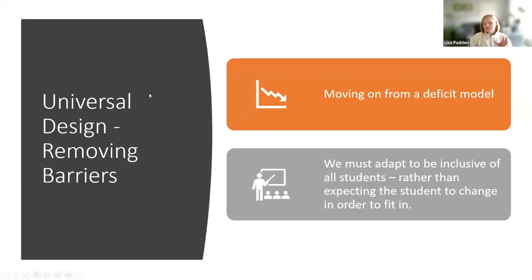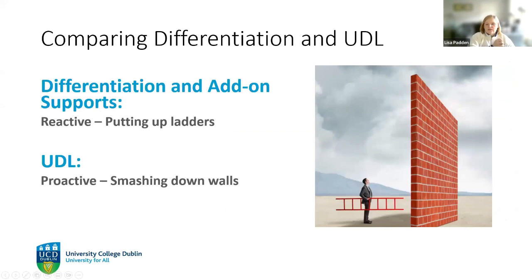We're trying to move things on from the deficit model. In higher education, the deficit model meant when a student came to university, we thought about what are they missing, what do we need them to have in order to fit in with us. In the University for All initiative in UCD, we're turning that around and asking, what's missing in the institution? What do we need to change about ourselves to make sure we're inclusive? What we call differentiation means we're putting up ladders — the walls remain and we give students something to help them get over the top.